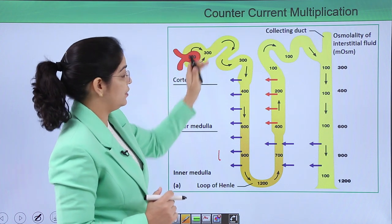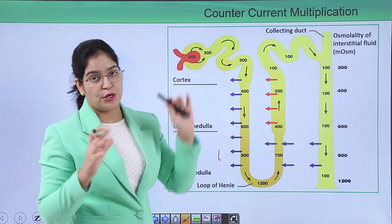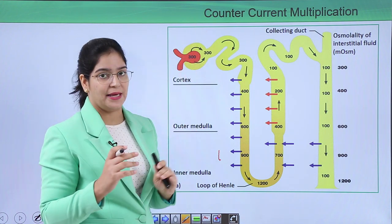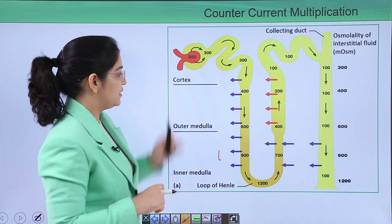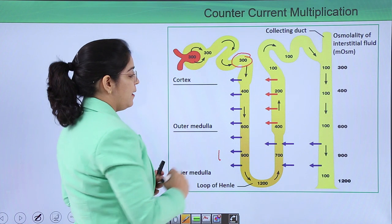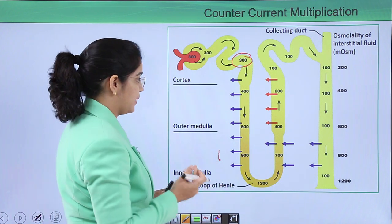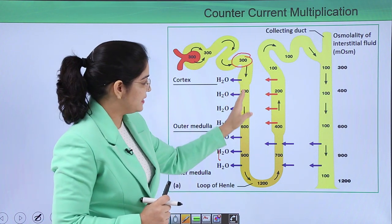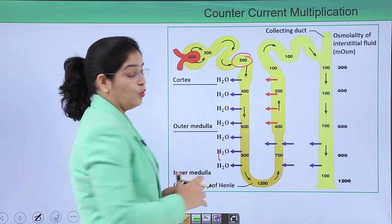When filtrate comes out from the glomerulus, it is the same as blood except it does not contain blood cells and blood proteins. Hence, the osmolarity here is the same as that of blood — 300 osmol per litre. As the filtrate moves down the descending loop, this osmolarity increases up to 1200, almost four times, because this tube is permeable to water and water is coming out, increasing the osmolarity inside the tube.